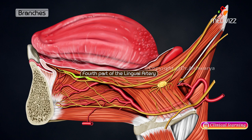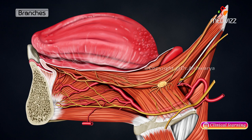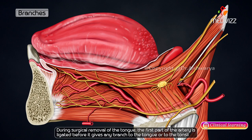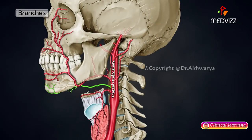The horizontal part of the lingual artery is accompanied by the lingual nerve. The lingual artery gives branches including the suprahyoid, dorsal lingual, and sublingual arteries. During surgical removal of the tongue, the first part of the artery is ligated before it gives off any branch to the tongue or to the tonsil.